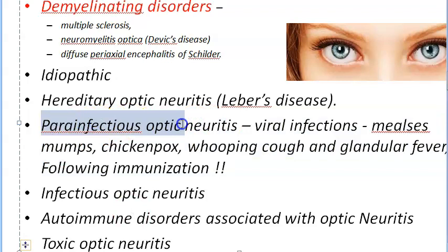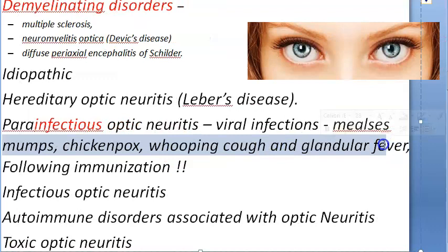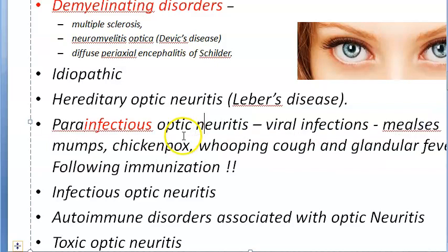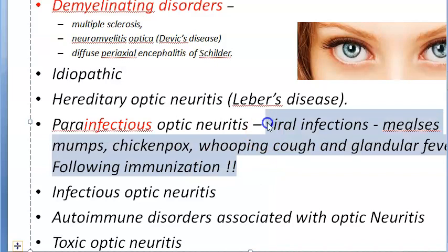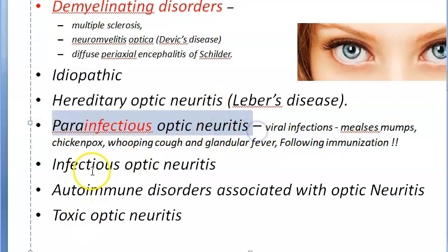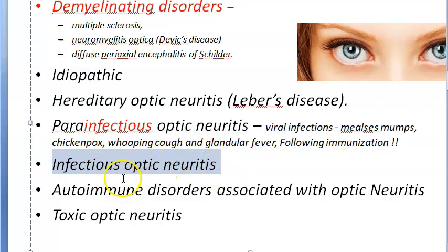There can also be infectious and para-infectious optic neuritis. Para-infectious means beside or around infectious. Viral infections like measles, mumps, chickenpox, whooping cough, and glandular fever can all cause optic neuritis. It can even occur following immunization. For infectious optic neuritis, sinus-related causes include acute ethmoiditis, or it can be associated with cat scratch fever, syphilis, tuberculosis, Lyme's disease, and cryptococcal meningitis in patients with AIDS.